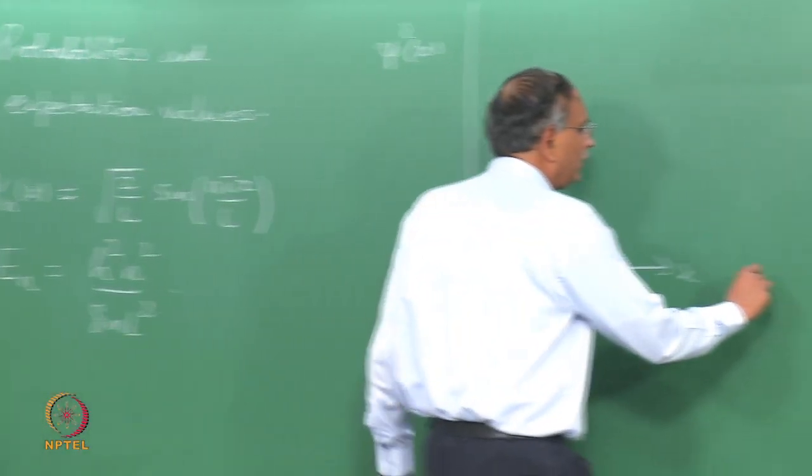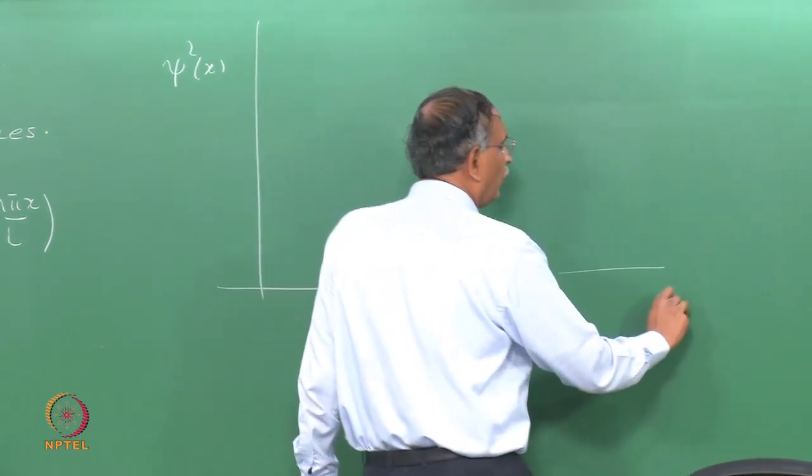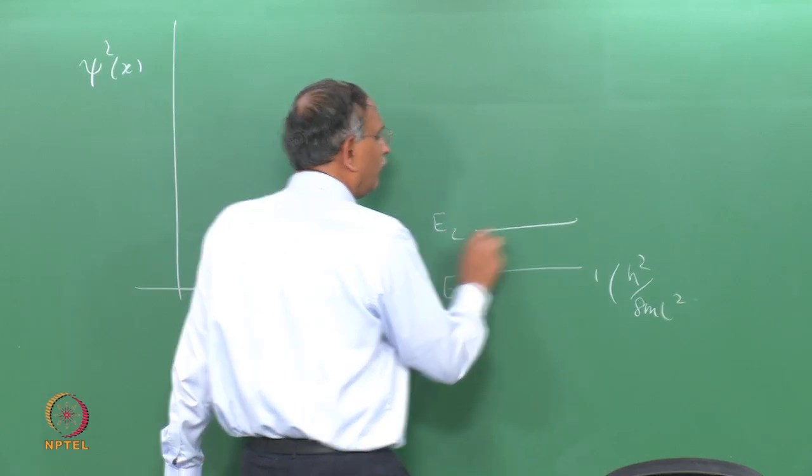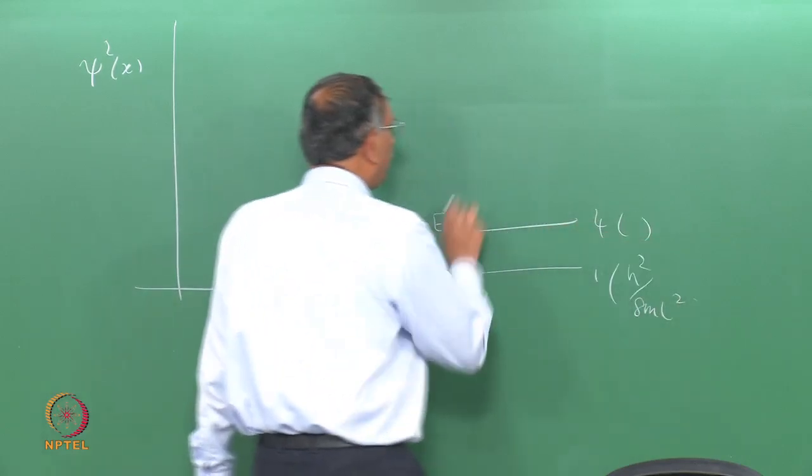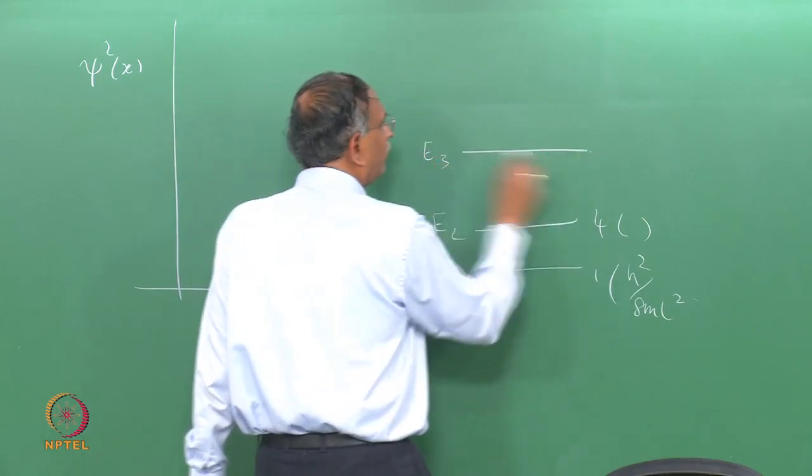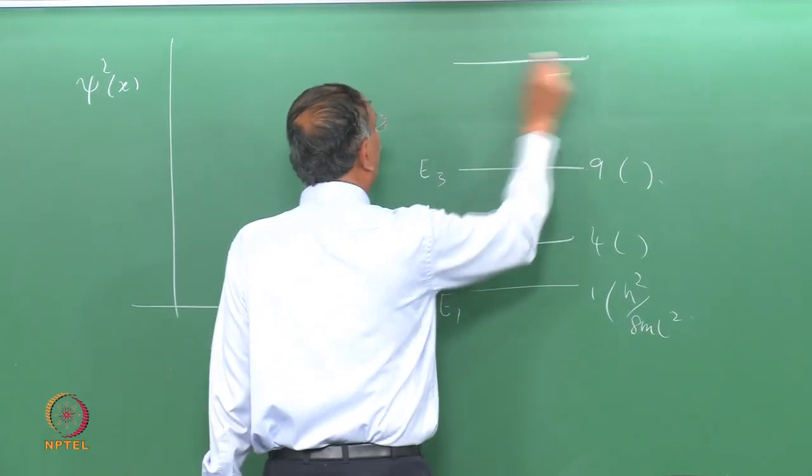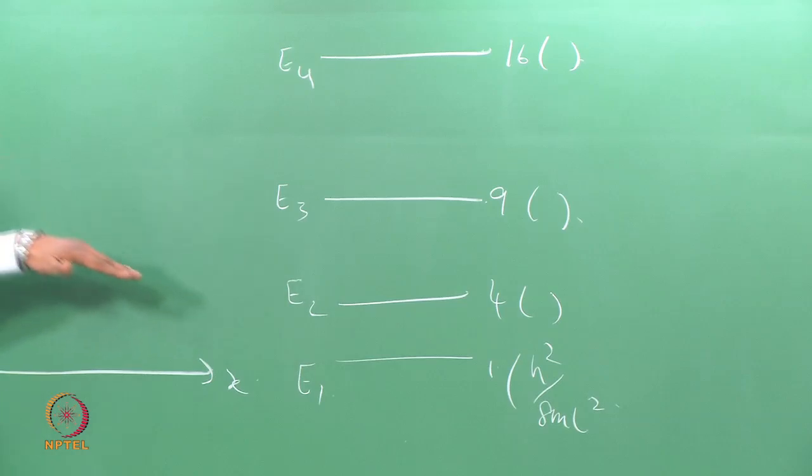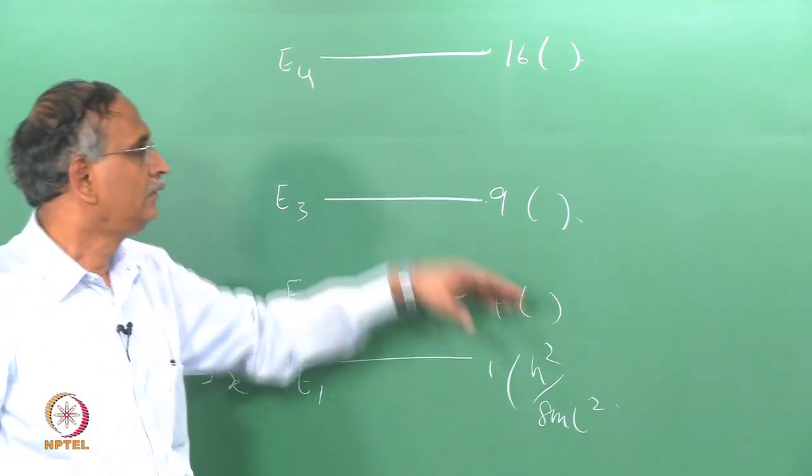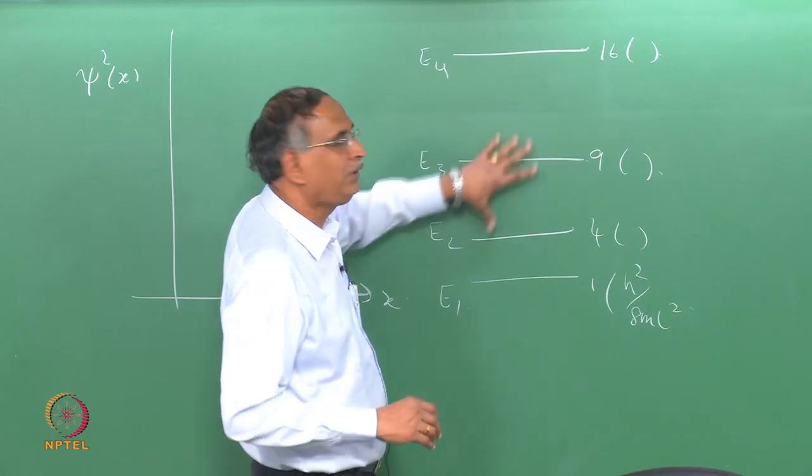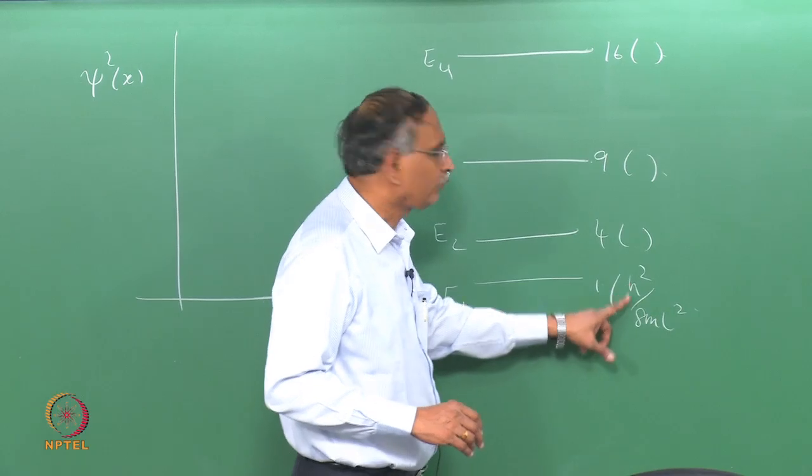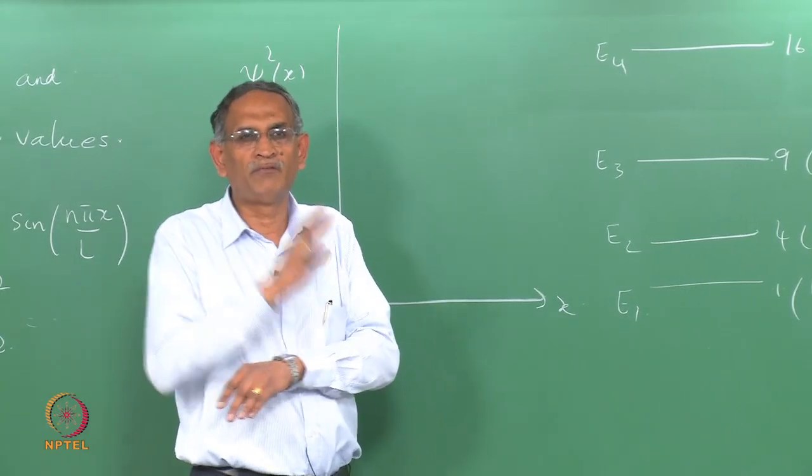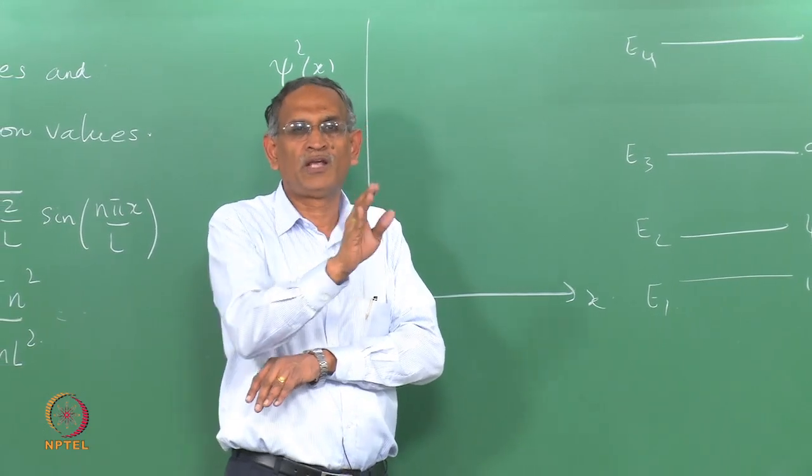If you plot E1, it is 1 times h²/(8ml²), E2 is 4 times that unit, E3 is 9 times that unit, E4 is 16 times that unit. And as you increase this energy, you see that the gap between the energies increased, but you can also see the following: as you increase these energies, the probabilities of finding the particle in any given region more or less approaches a constant value, which is proportional to the extent of that region divided by the total length.